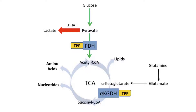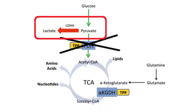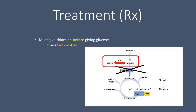The key question is: which do you give first? If you give glucose first, it gets funneled through glycolysis to pyruvate, but since PDH is still shut down without thiamine, the pyruvate cannot become acetyl-CoA and instead all becomes lactic acid — potentially causing lactic acidosis. So remember: always give thiamine first, then glucose.